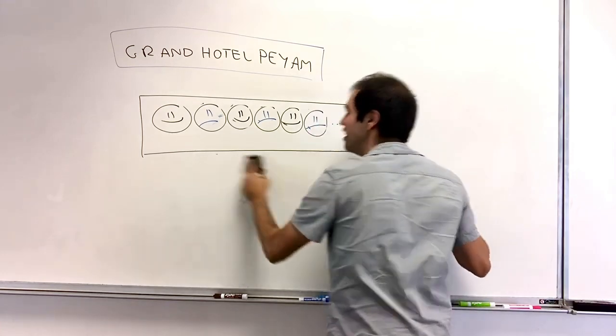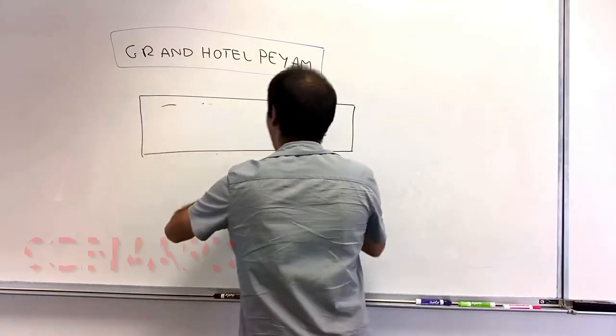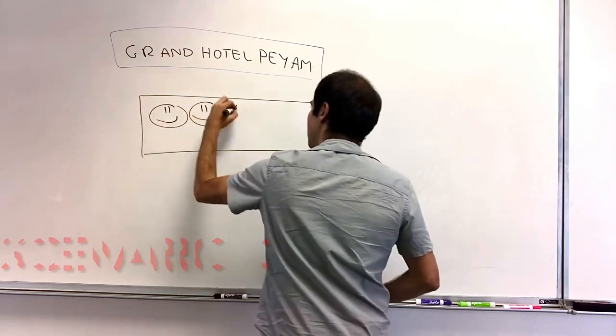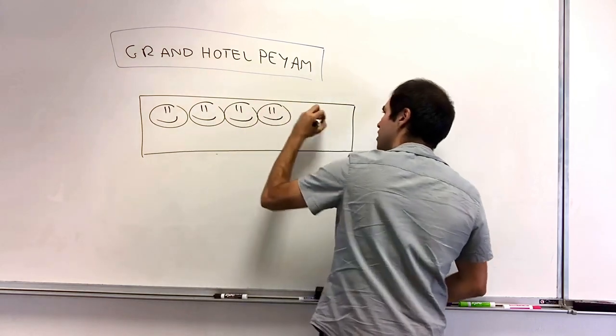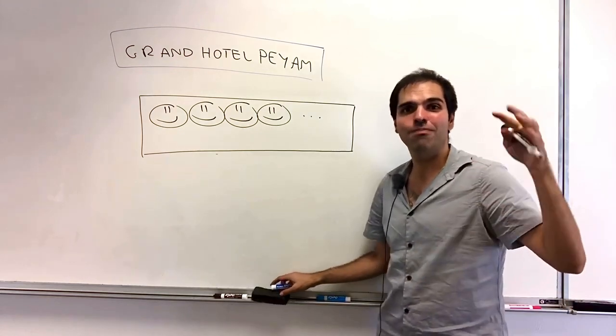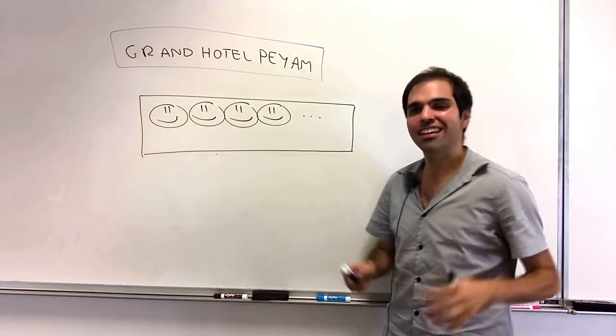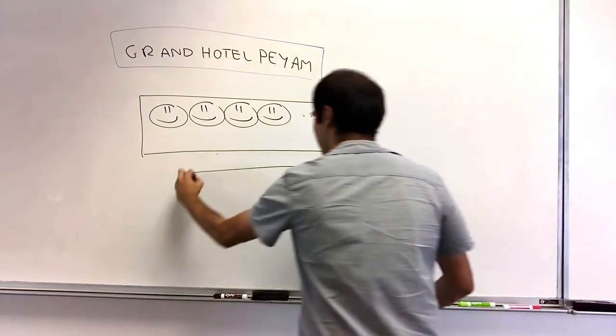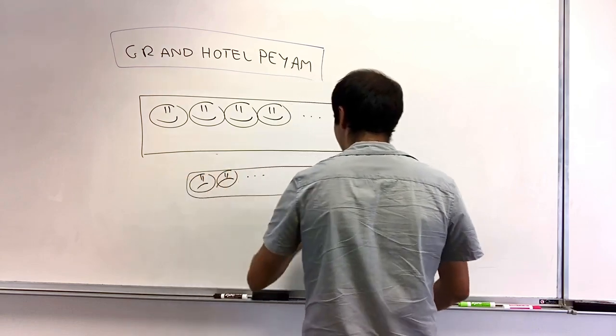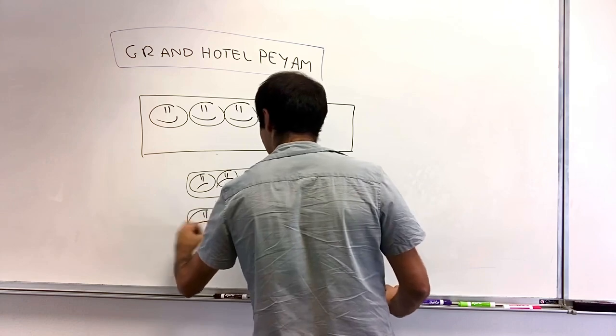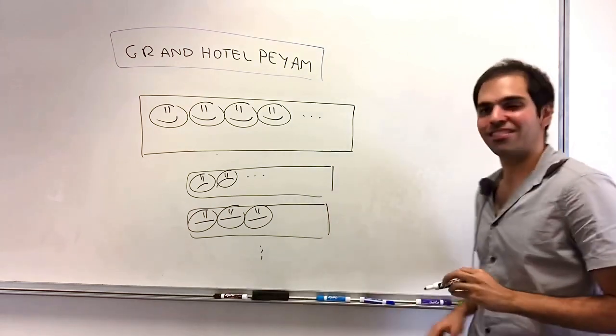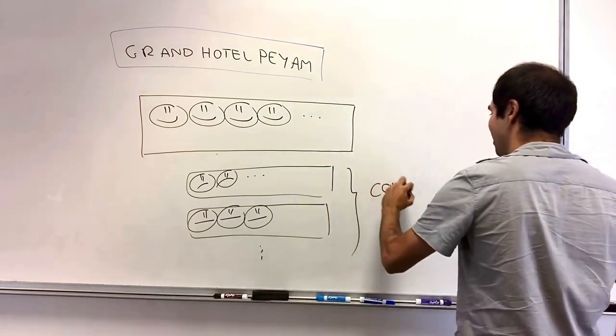But now, what if we have a super spicy situation, and you still have the fully booked out room, like this, but suddenly, you had countably infinitely many buses with countably infinitely many passengers. So you have one bus with like sad passengers, another bus with like meh passengers. Very strict. And then other ones, excited passengers, et cetera. So here you have countably infinitely many buses.